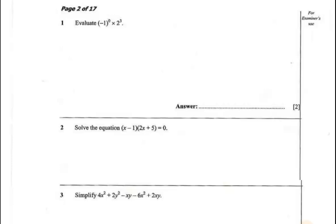Question 1: Evaluate (-1)⁰ × 2³. A number raised to the power zero is zero, except zero itself. So what do we have here? We have 1 multiplied by 2 times 2 times 2, which is 4 times 2, which equals 8. The answer is 8.